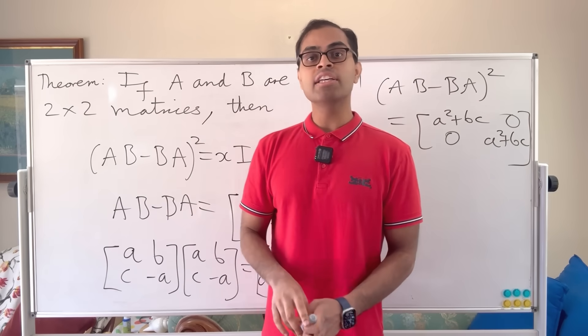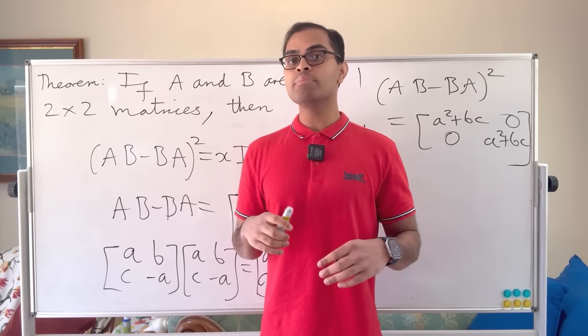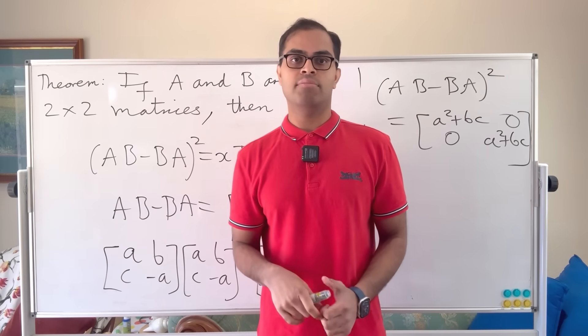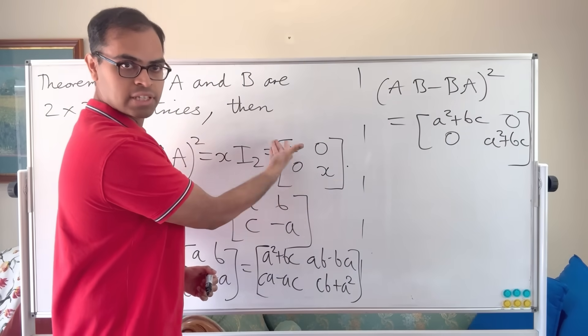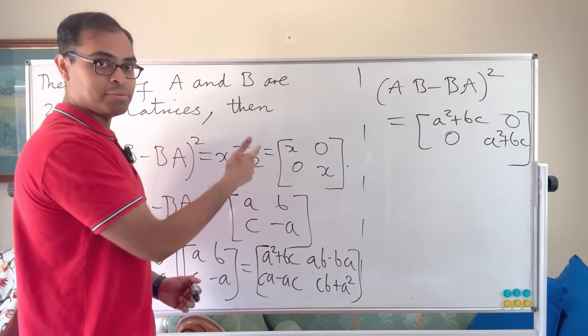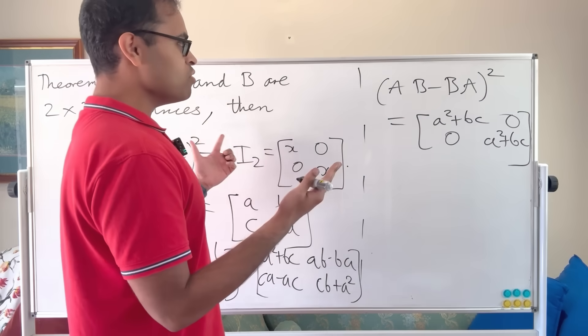then AB minus BA squared is always going to be commuting with every other linear transformation. So the matrices that commute with everything are just the diagonal matrices where both entries on the diagonal are the same, the scalar multiples of the identity. So there you have it. How cool is this exercise?